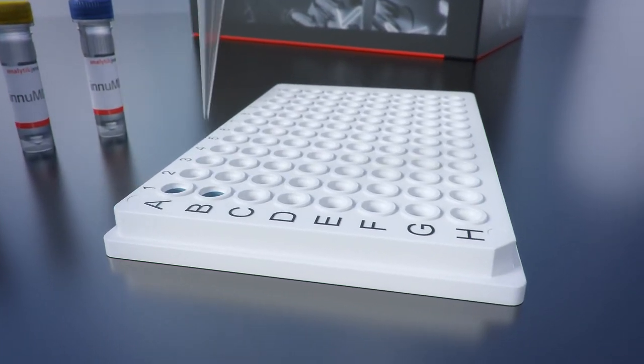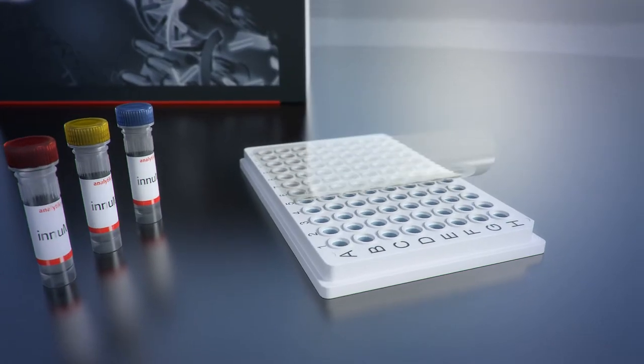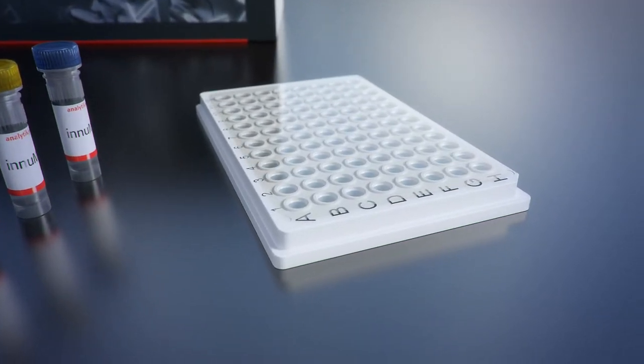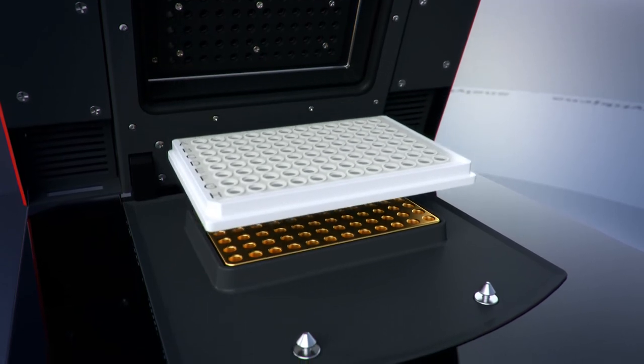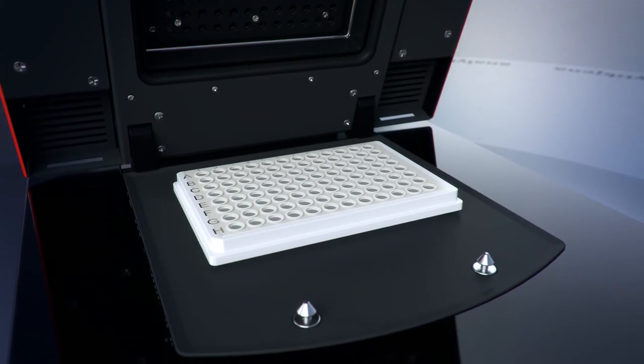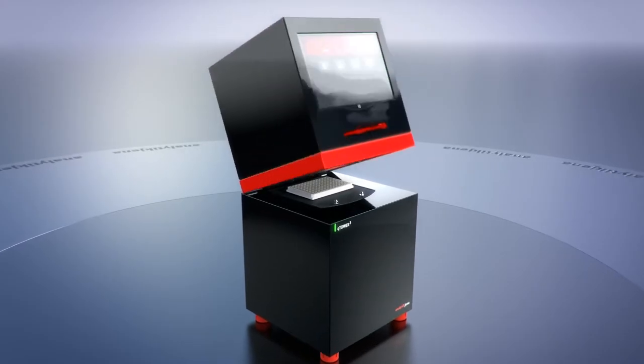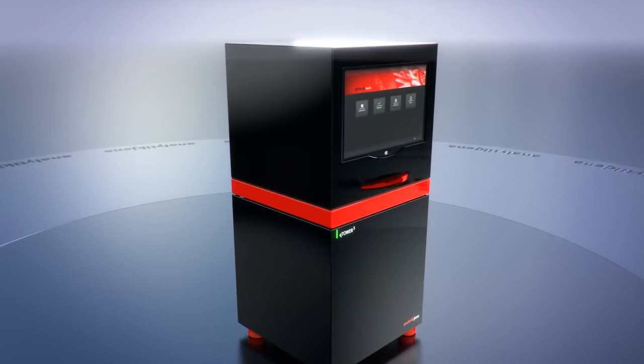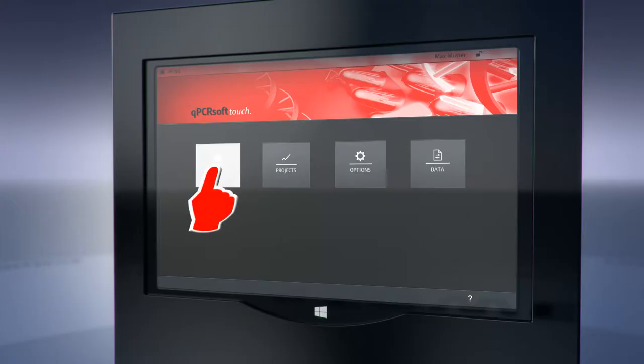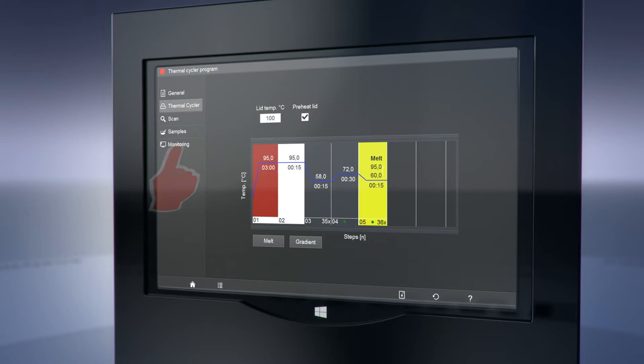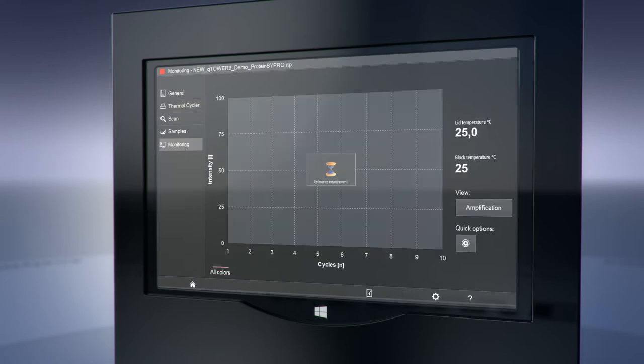Jena offers ready-to-use master mixes for intercalating dyes or probe-based assays, as well as InnoScript kits for reverse transcription. Utilizing these optimized kits, Q Tower 3 provides reliable reactions in a wide volume range from 10 to 80 microliters, regardless of performing simple singleplex or highly sophisticated multiplex applications.